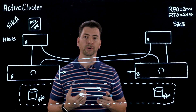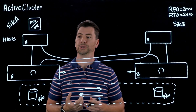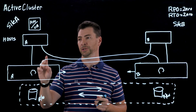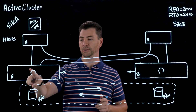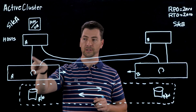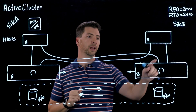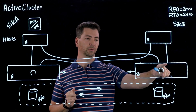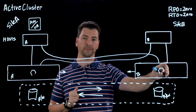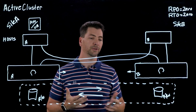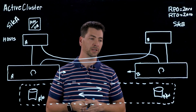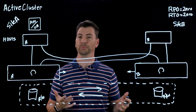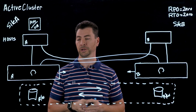We also support another configuration called non-uniform. In a non-uniform configuration, host A would have access only to array A, and host B would have access only to array B. The main difference between these configurations is a couple of behaviors that you have in failure scenarios.